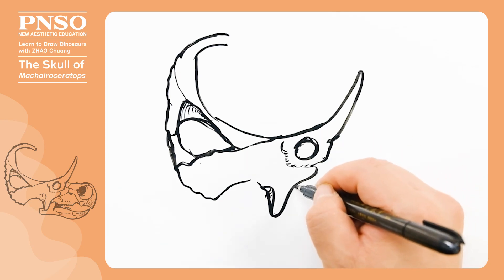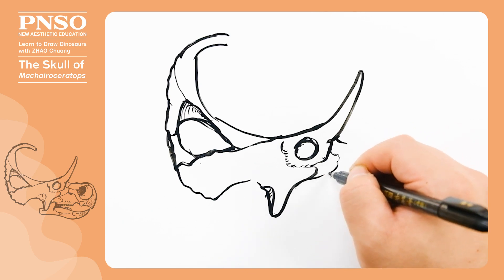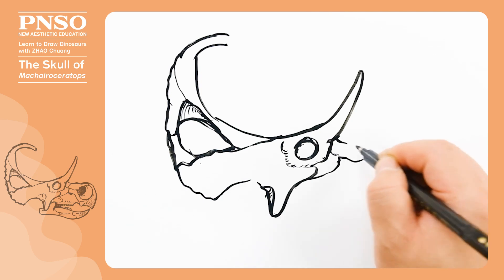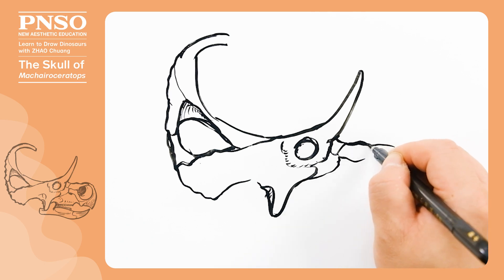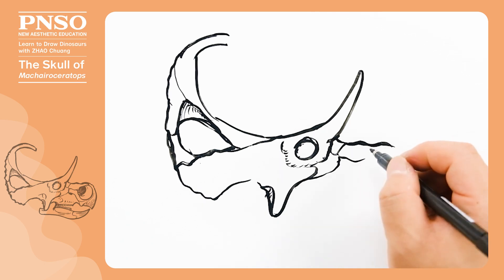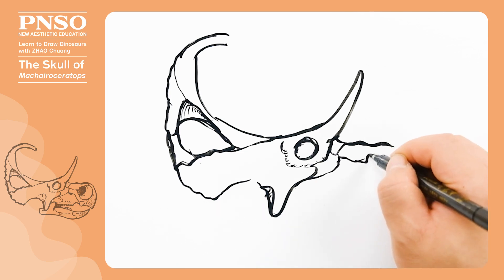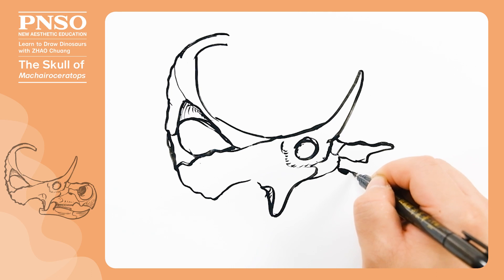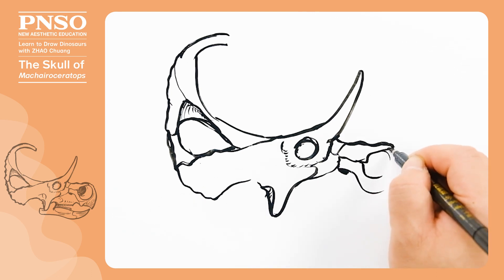Further forward were the lacrimal and nasal bones. When drawing the nasal bones, we can take reference from the Diabloseratops. Large nostrils were formed between the premaxilla and the nasal bones.